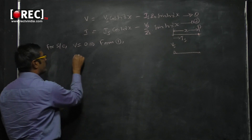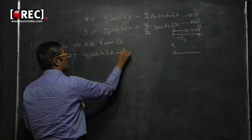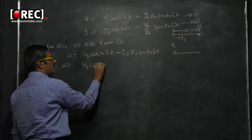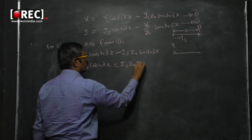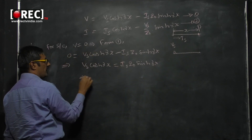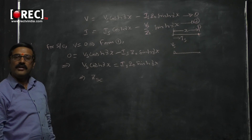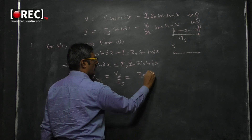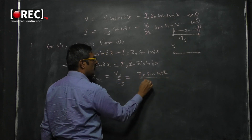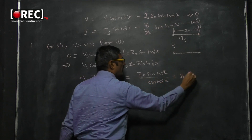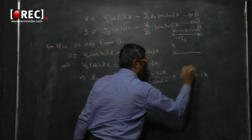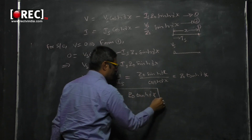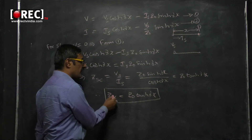For short circuit, V equals 0. Substituting into equation 1: 0 equals Vs·cosh(γx) minus Is·Z0·sinh(γx), which gives Vs·cosh(γx) equals Is·Z0·sinh(γx). Since impedance is the ratio of voltage to current, Zsc equals Vs/Is equals Z0·sinh(γx)/cosh(γx) equals Z0·tanh(γx). Therefore, Zsc equals Z0·tanh(γx).